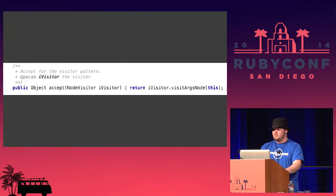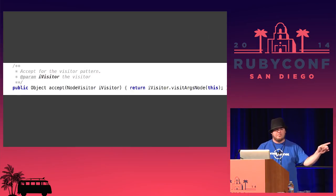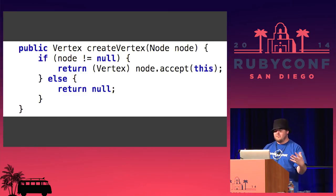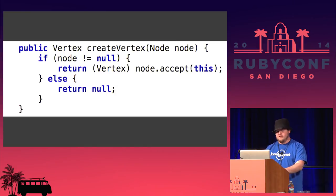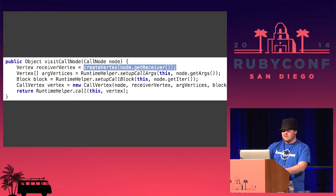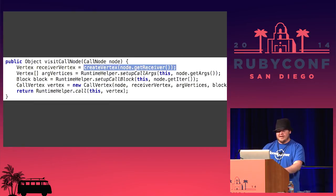R-Sense walks the AST after it's been parsed and builds up a graph of nodes using an abstract interpreter. It uses something called the visitor pattern to do that. Every node in the AST will implement an accept method, which calls the specific visit method on the visitor passed in. In R-Sense, a method called create_vertex creates a vertex in the graph, calling accept on the node object and passing itself in. Then the visit method — for example, for a call node — does things specific to that node type, like creating a receiver vertex, and this is how it walks through the AST.